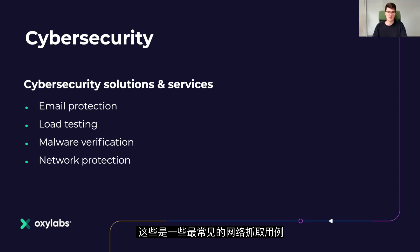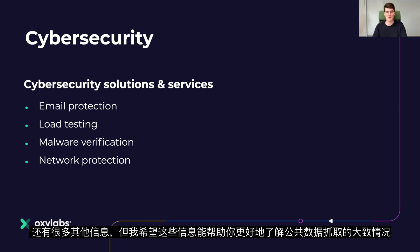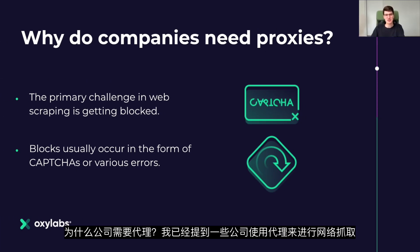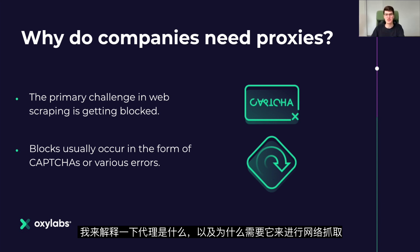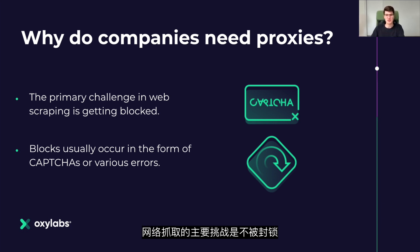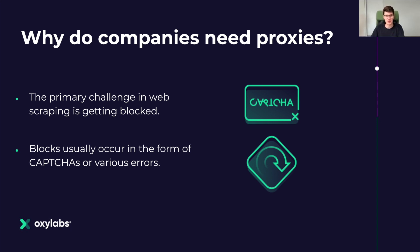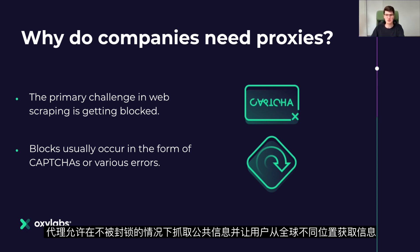These are the most common web scraping use cases. There are many more, but I hope this information helps you get a better understanding of the public data scraping landscape. Why do companies need proxies? The primary challenge in web scraping is not getting blocked. Blocks usually occur in the form of CAPTCHAs or various errors. Web scraping is an automated process, and some websites block the IP address from where the scraping activity originates. That's where proxies come in — they allow scraping public information without getting blocked and let users access information from different locations around the world.